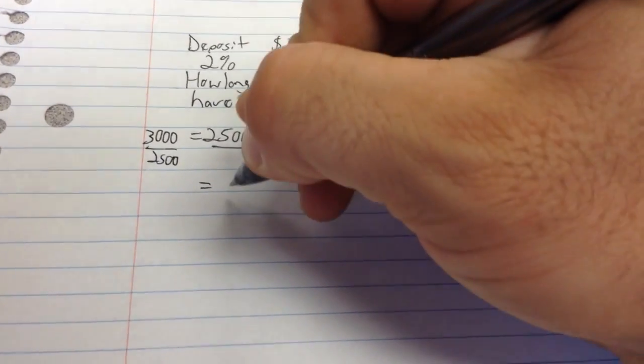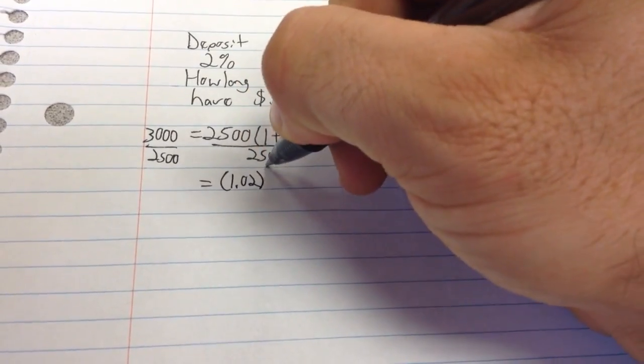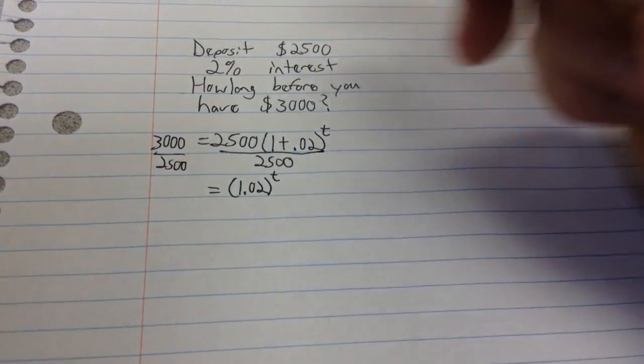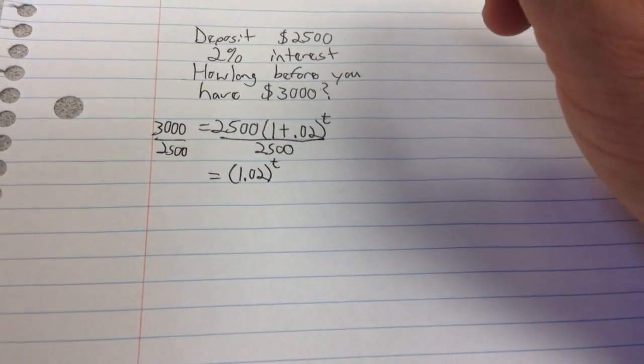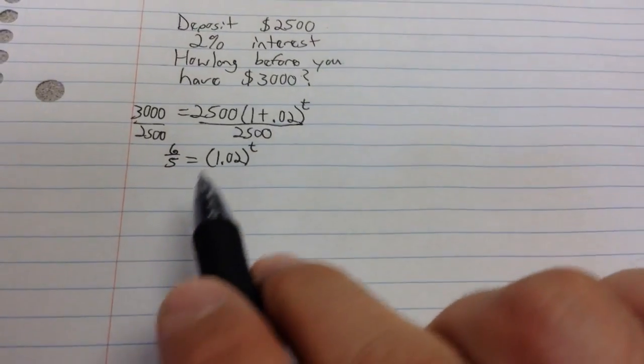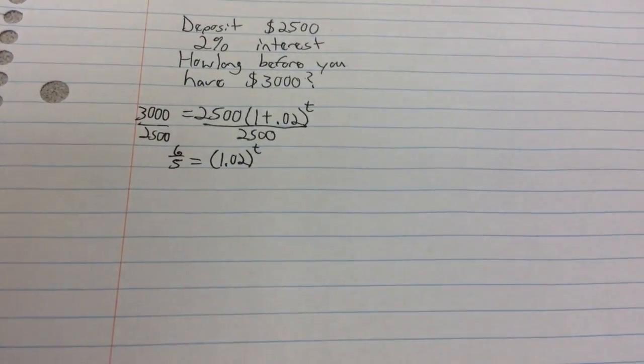On the right hand side, what that's going to leave me with is 1.02 raised to the t power. On the left hand side, $3,000 divided by $2,500 is going to give me 6 over 5 as a fraction. Yes, I'm going to leave that as a fraction. Yes, you could get a decimal that's not too bad.